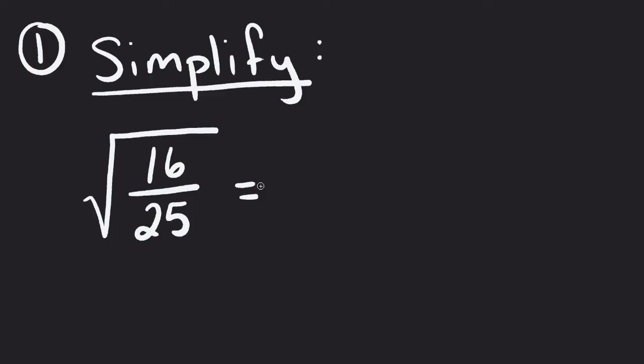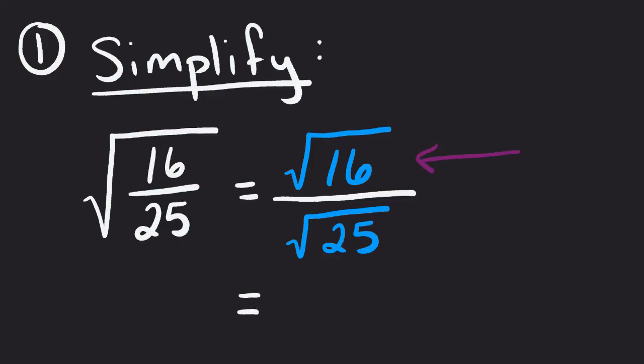But if we use this property, this rule that basically says go ahead and break it up, put it into its two individual parts and put this as the square root of 16 over the square root of 25. And now rather than looking at this as a fraction, let's just look at what happens to the numerator and what happens to the denominator.